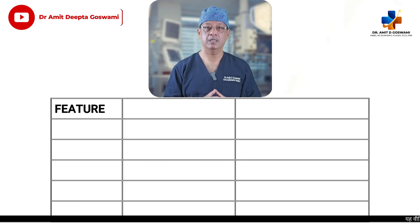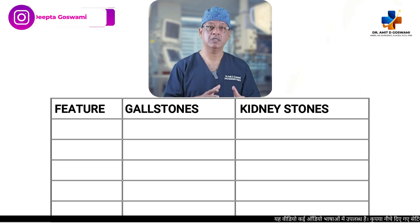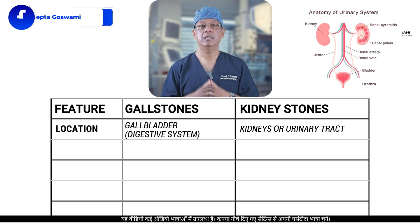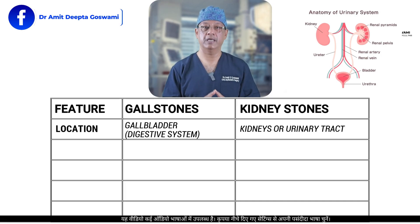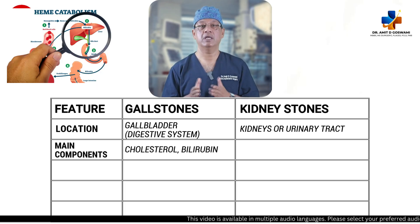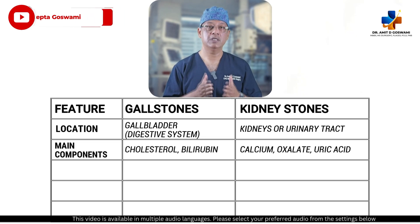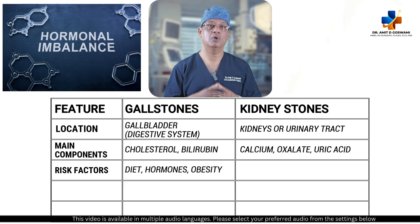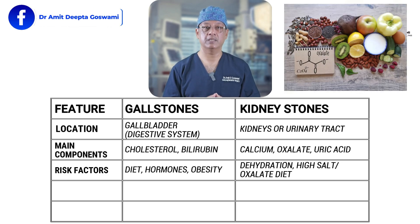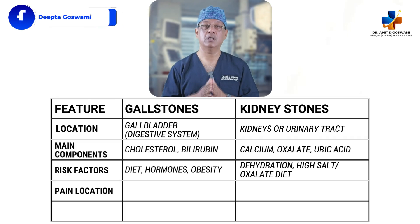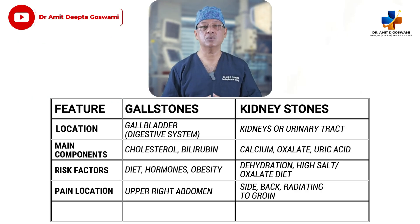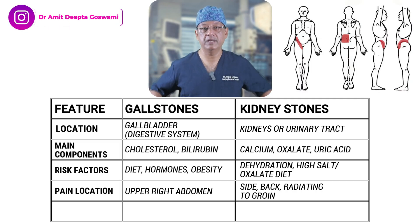Let's summarize the key differences between gallstones and kidney stones. Regarding location: gallbladder stones are obviously located in the gallbladder, while kidney stones occur in the kidney or urinary tract. Main components: gallstones are made of cholesterol, bilirubin, etc., while kidney stones consist of calcium, oxalate, and uric acid. Risk factors: for gallbladder stones it's diet, hormones, or obesity; for kidney stones it's dehydration, high-salt diet, or a diet high in oxalate. Regarding pain: gallbladder stones cause pain in the upper right abdomen, sometimes radiating to the back, while kidney stone pain is in the flanks and normally radiates to the groin.